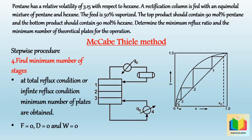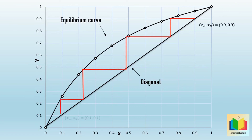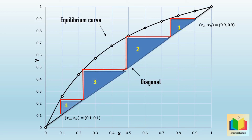To draw the steps, we draw a line from (XD, XD) up to the equilibrium curve and then a vertical line down to the diagonal, continuing until we reach or cross the point (XW, XW) which is (0.1, 0.1). Counting the triangles, we get 4 triangles. Since each triangle represents one tray, the minimum number of trays is 4.